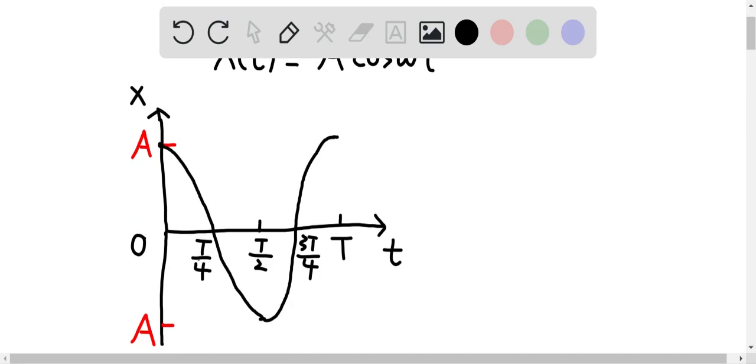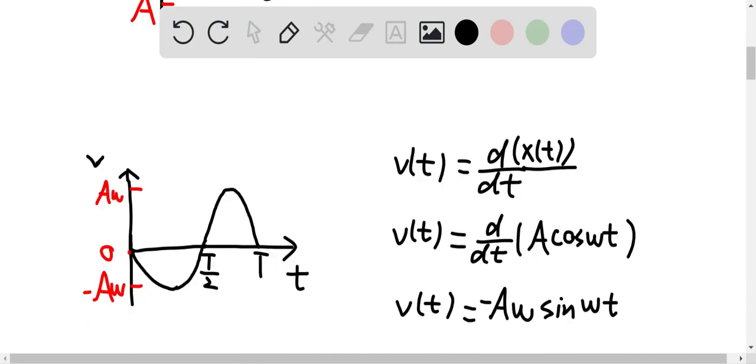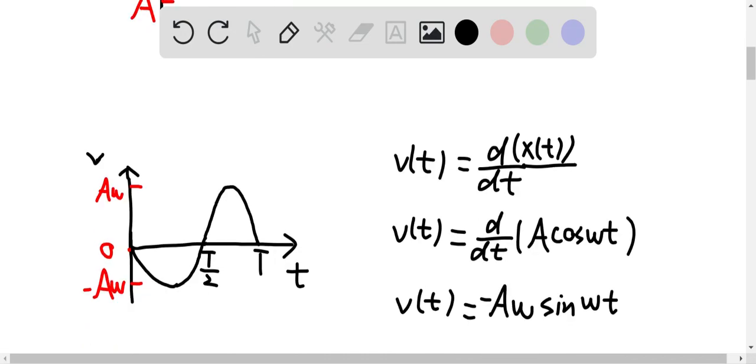Therefore, this is the position versus time graph. And this is the velocity versus time graph for simple harmonic motion. We know v(t) equals the derivative of the position versus time function over dt. So eventually, we have v(t) is equal to negative A omega sine omega t, and the amplitude for the velocity is A omega.